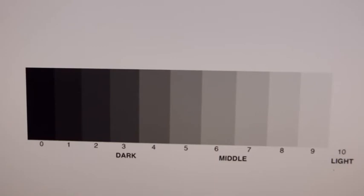What you're looking at is called a value scale. Light is talked about in art as a value. The lightest light is a value of 10, and the darkest dark is a value of zero.